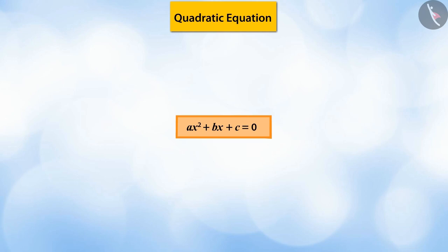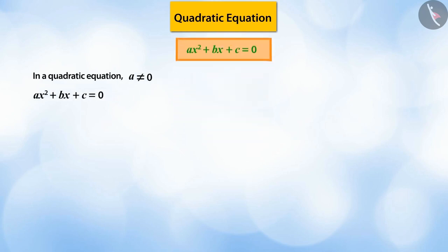You have already studied that a quadratic equation is ax² + bx + c = 0, where the value of a is never zero, because then it will become a linear equation and not a quadratic equation.